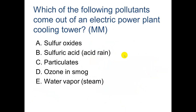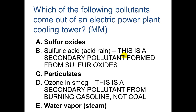Which pollutants come out of an electric power plant cooling tower? Sulfuric acid is actually a secondary pollutant, so it does not come out of the smokestack. And ozone is photochemical smog from burning gasoline in cars, not from burning coal, because it requires VOCs — which are like unburned gasoline.